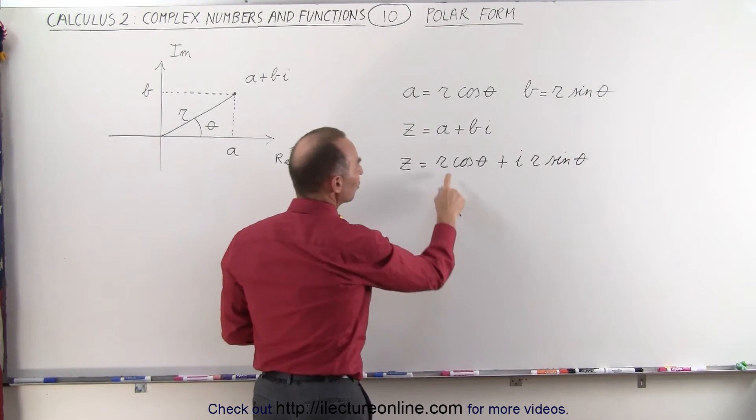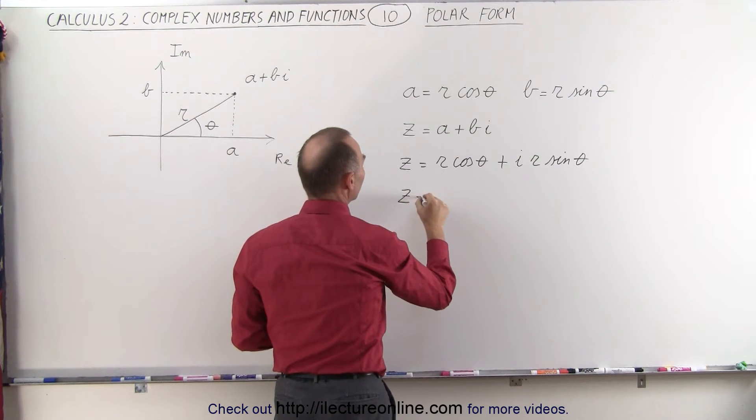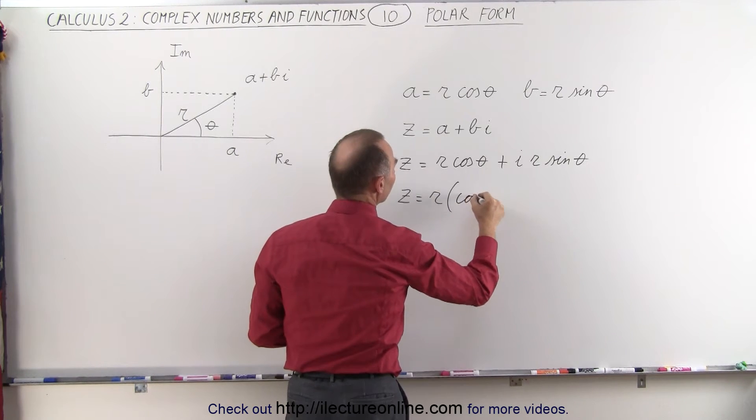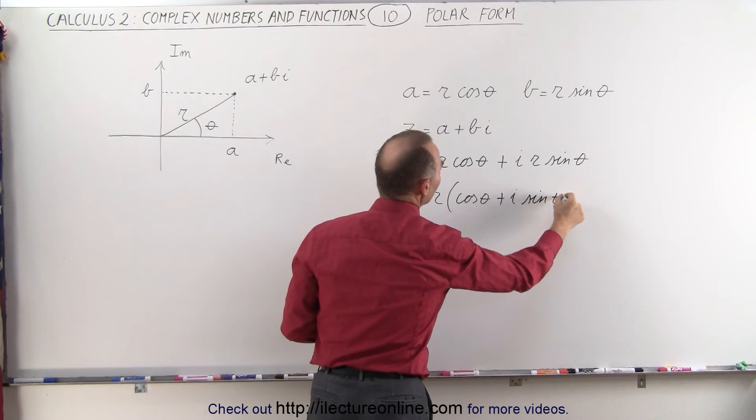Now notice that each of these two terms has an R in it. We can factor it out. So Z becomes equal to R times the cosine of theta plus I times the sine of theta.